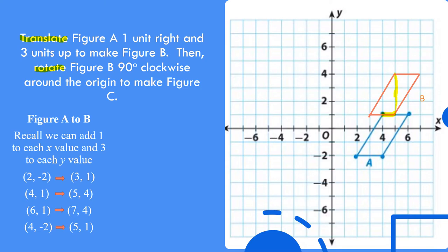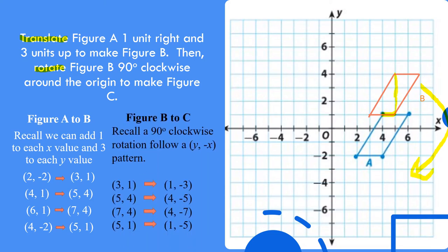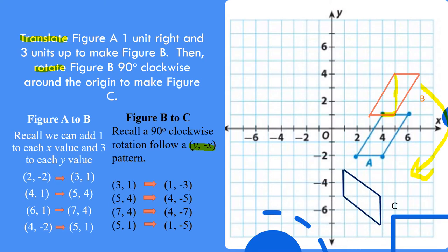After I translate it, I now need to rotate it 90 degrees clockwise around the origin. That means I'm going to take the shape and turn it 90 degrees in this direction. Recall our rules from last week: 90 degrees means we take the points (X, Y) and make them (Y, negative X). So three, one would become one, negative three. Doing that for each point of B gives my final transformation for figure C.